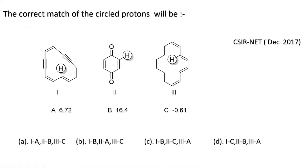Now the next question: the correct match of the circled protons. This question is asked in CSR Net December 2017. They have given three molecules with circled protons and three chemical shift values: 6.72, 16.4, and −0.61 ppm, along with four options. A vinylic proton will resonate at 6.72 ppm — that much information you need to know.